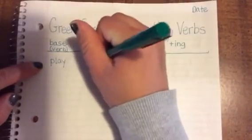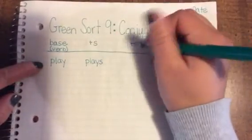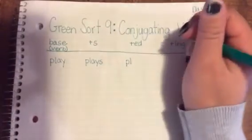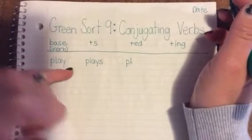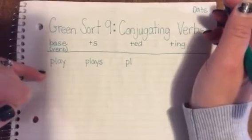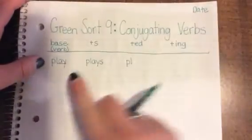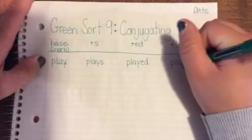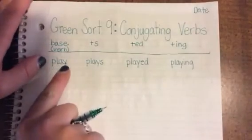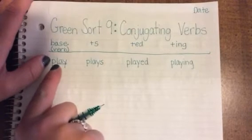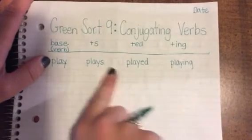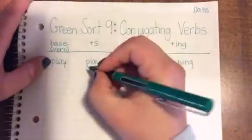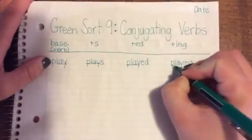Play becomes plays by adding an s — for example, 'She plays the violin.' To make it in the past, all of these base words in this first section are going to end with ay. Since play has a vowel right in front of the y, we keep the y and add ed, and we keep the y and add ing. So play becomes plays, played, and playing simply by adding s, ed, and ing to your base word. You'll notice you keep play in all of these.